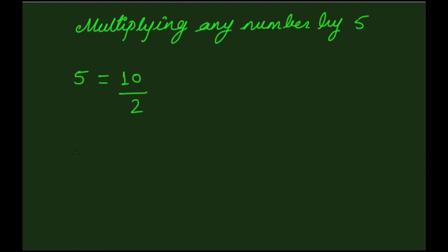For example, if we need to perform the multiplication 26 times 5, then we'll just put a zero to the right of the given number 26. So it becomes 260, and then we'll reduce it to half. That is 260 divided by 2 equals 130.